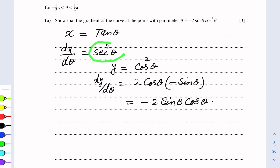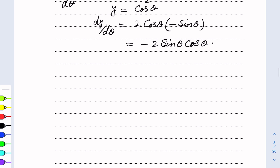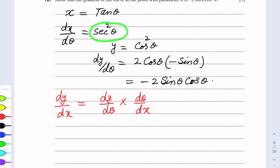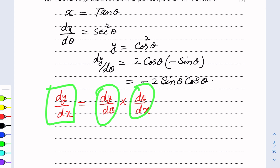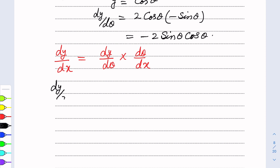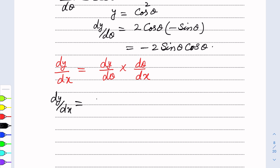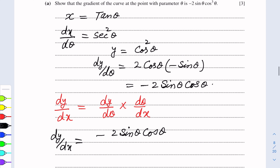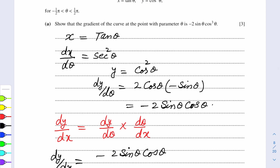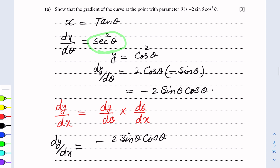This is dx over d theta and this is dy over d theta. Now we will use the chain rule. Chain rule states: dy over dx equals dy over d theta multiplied by d theta over dx. dy over d theta is minus 2 sin theta cos theta. dx over d theta is sec squared theta, which goes in the denominator.